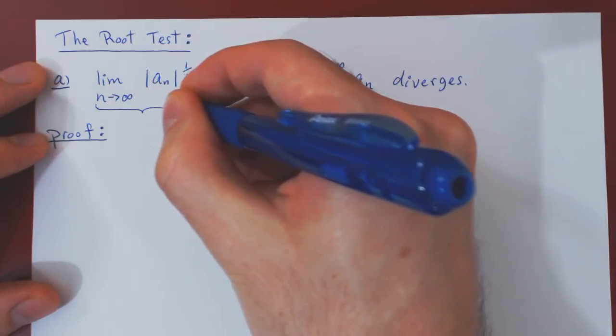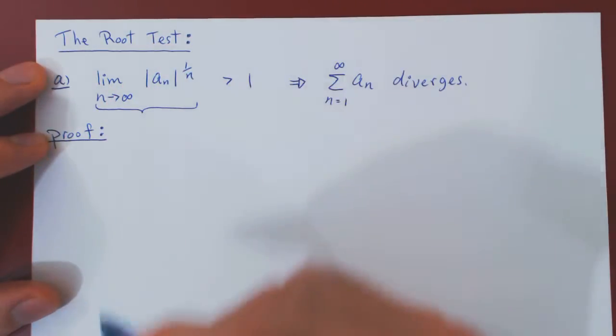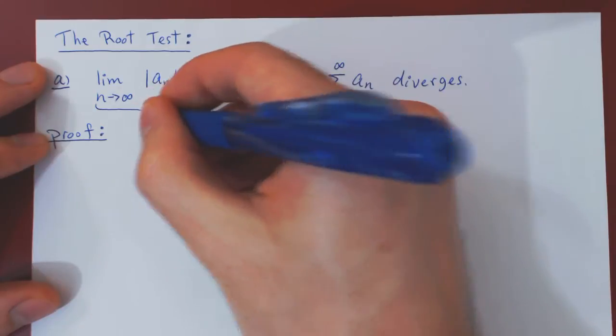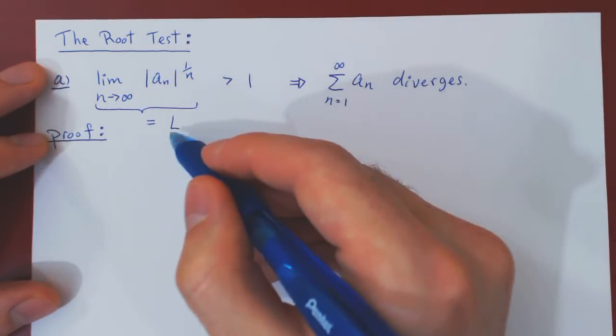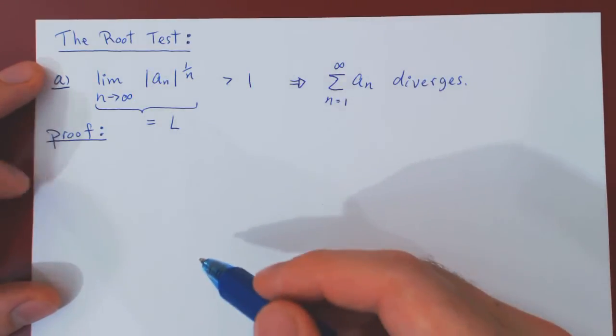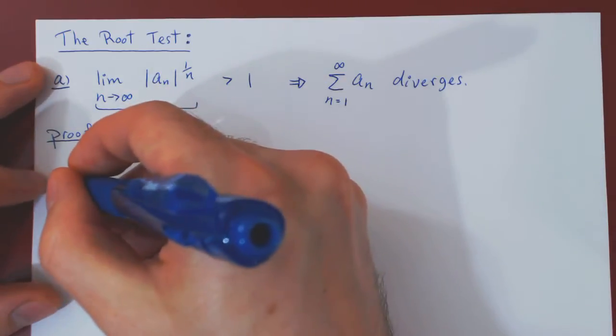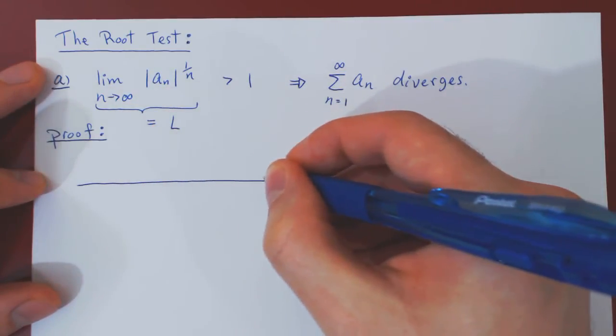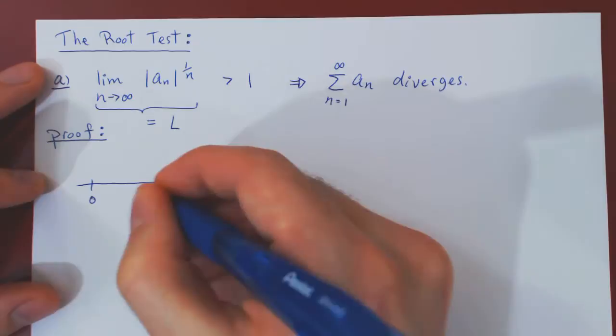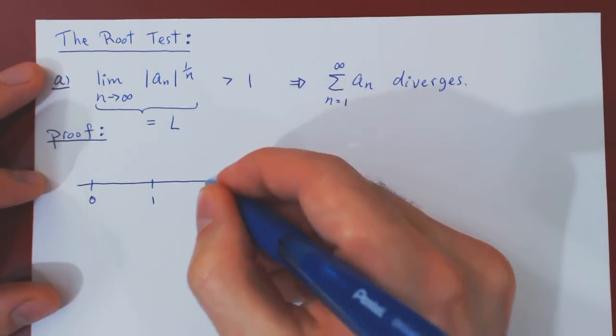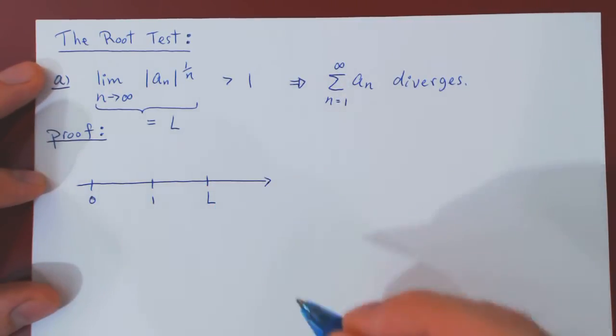Well, suppose we let the limit of the nth root of a_n in absolute value be equal to L. What we're seeing is L is strictly bigger than 1. So let's visualize this onto the real line. So here's 0, here's 1, and L is some real number bigger than 1.